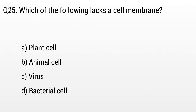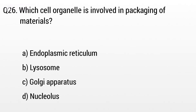Question 25. Which of the following lacks a cell membrane? Option A: Plant cell, B: Animal cell, C: Virus, D: Bacterial cell. The right answer is option C, Virus.